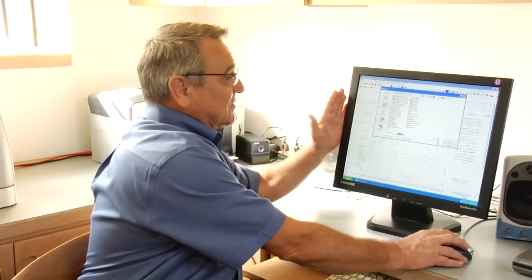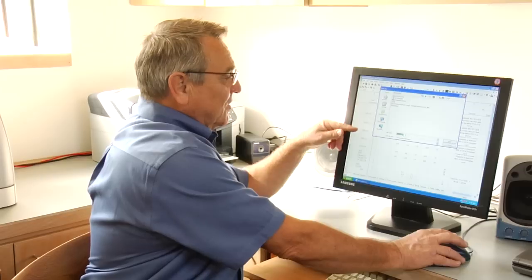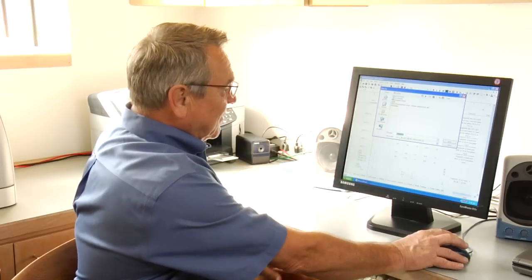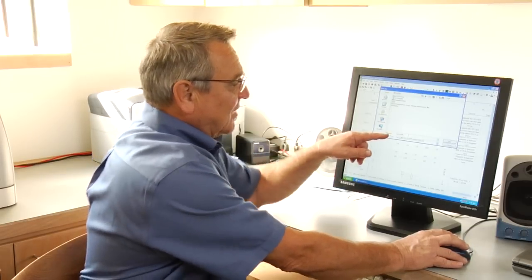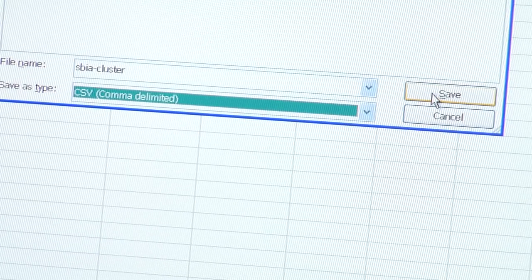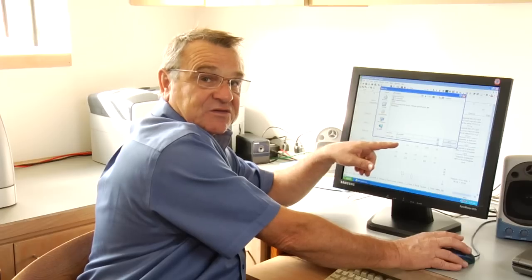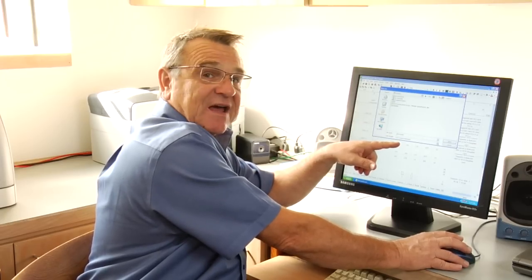So I'm going to save this on the desktop. You see on the left hand side here I'm going to click on Desktop. Then I'm going to put a file name in down here and I'm going to put in SBI cluster, which is the name of this file. And then it says Save As and it says save as a comma separated file also known as comma delimited. I'm going to change that.